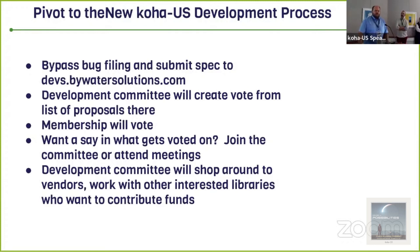Getting an idea on the devs page starts a first discussion with a vendor — they might ask clarifying questions that help craft a meaningful submission. The development committee will create a list of items to vote on from that page. Anyone can attend their meetings and advocate for a particular bug, or join the development committee. Eventually, once items are decided on, they'll put out a vote and membership will have a say in what gets decided.